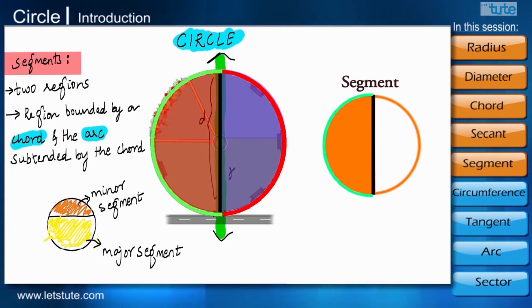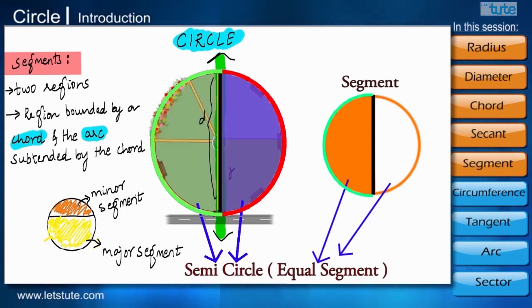If the chord or a secant is a diameter, then the circle gets divided into two equal regions. And in our case, it gets divided into two equal semicircles.